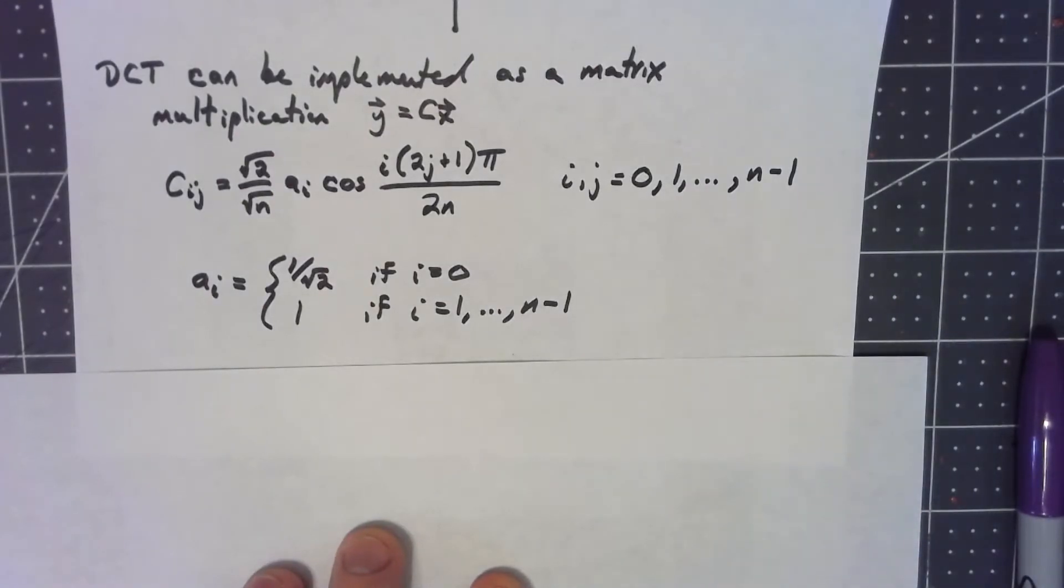When we first implemented the discrete Fourier transform, we did it in a very inefficient way that we later modified to be the fast Fourier transform. The discrete cosine transform is closer to that original way we did the discrete Fourier transform. That is, we set it up as a matrix multiplication. Again, this is all going to be real numbers rather than the complex numbers we had in the Fourier transform matrix.